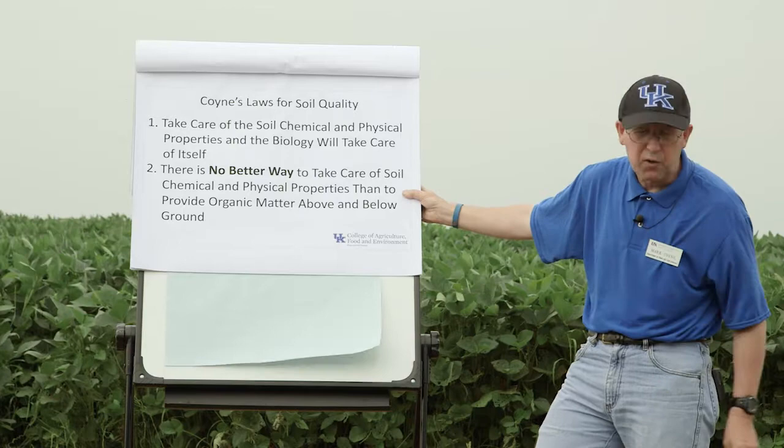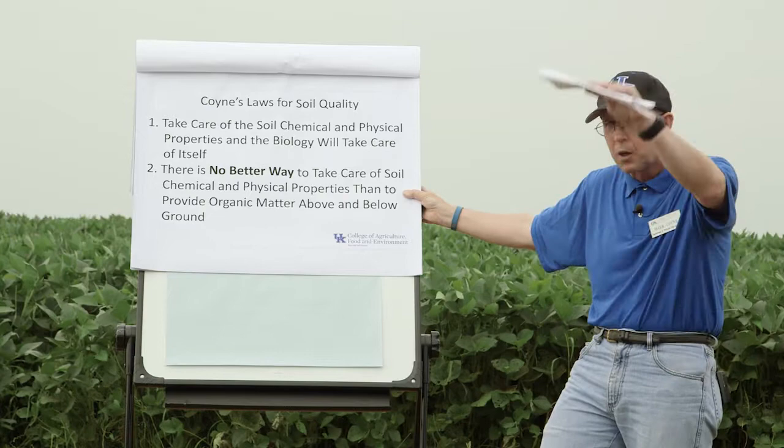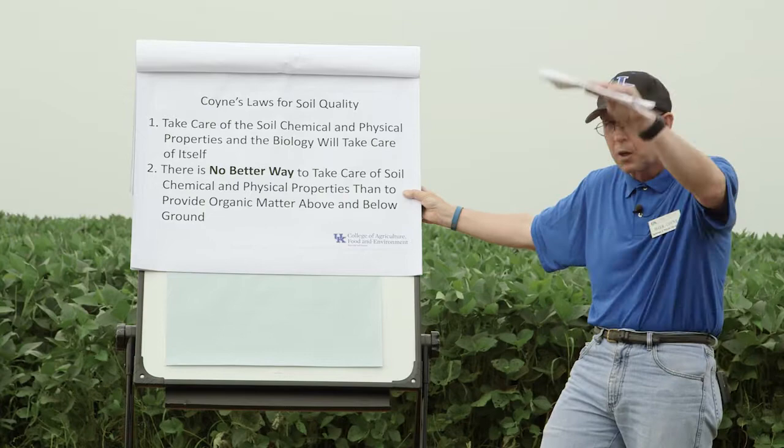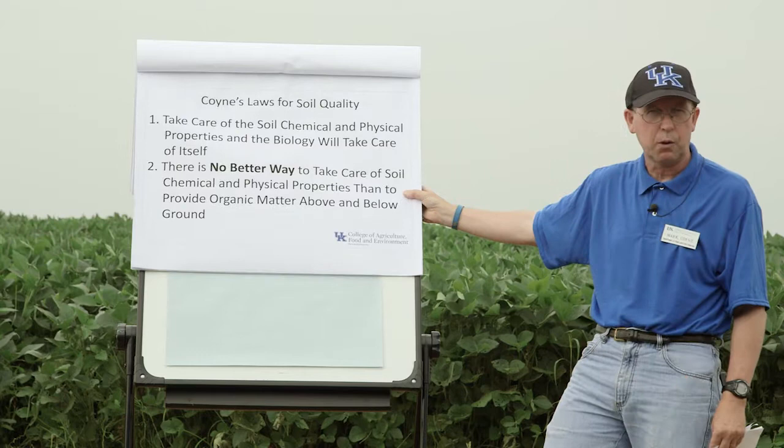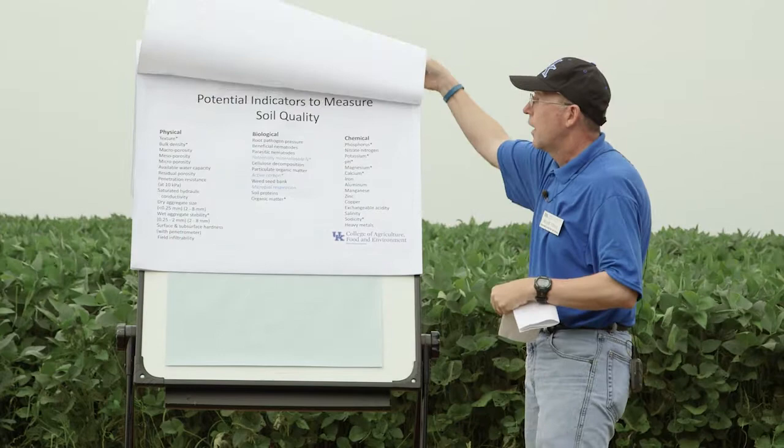The second point is there's no better way to take care of those soil chemical and physical properties than to provide organic matter above ground and below ground. No tillage leaves lots of nice residue on the soil surface — you're protecting your above ground. Cover crops partly address putting organic matter below ground in terms of those plant roots. Organic matter above ground and below ground is the best way to manage chemical and structural or physical properties.